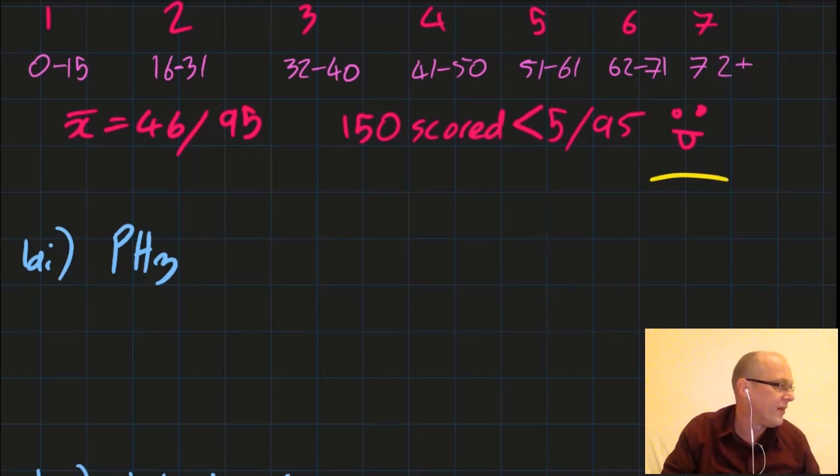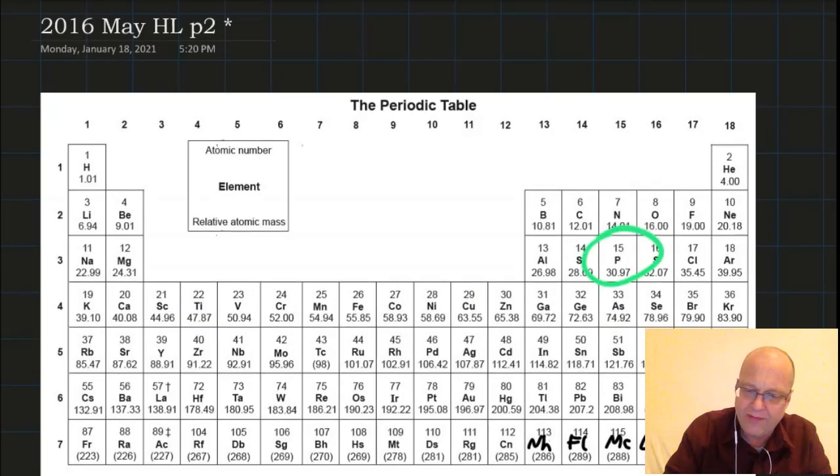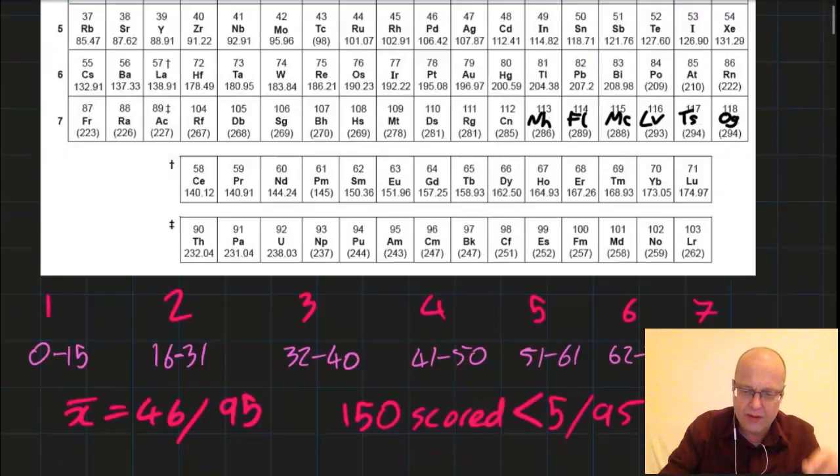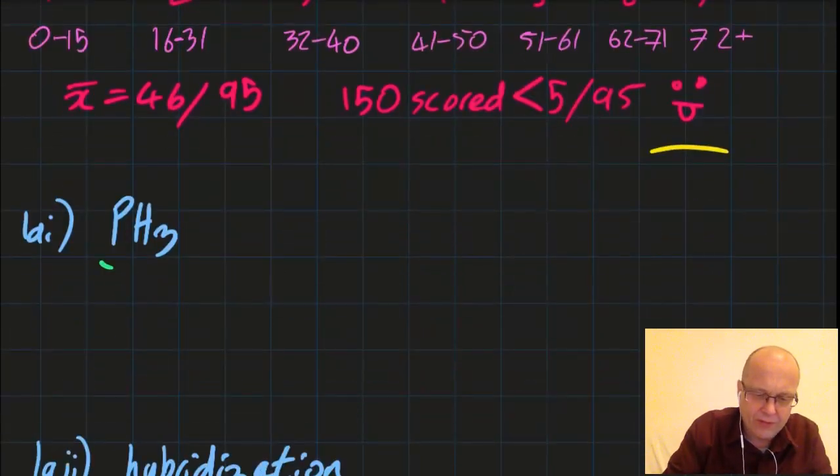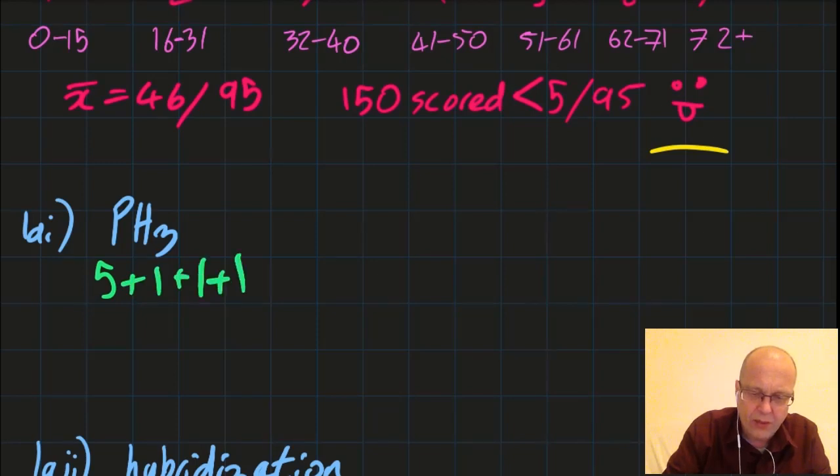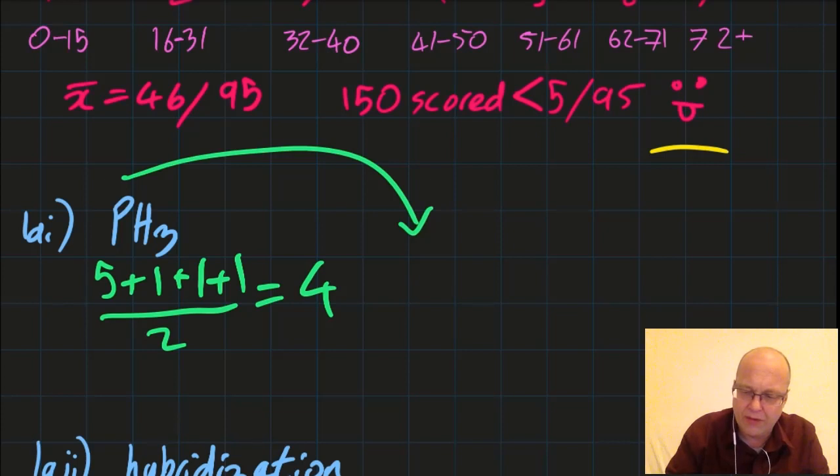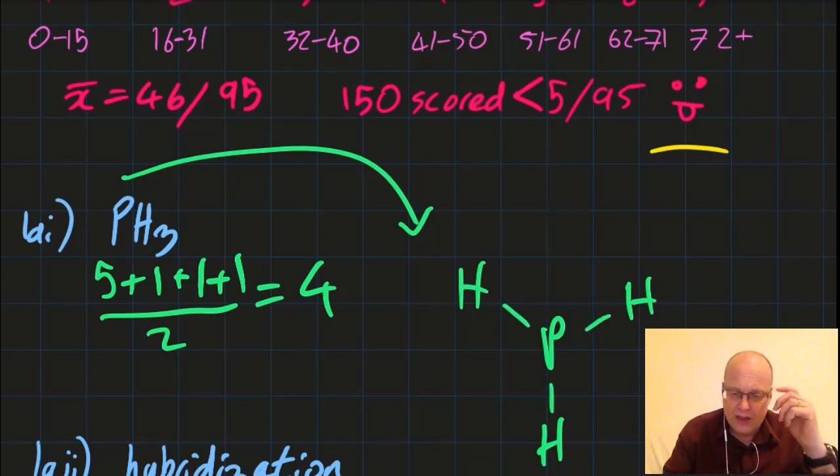Okay, pH3, phosphine. I seem to remember that spontaneously catches fire in air. Let's draw that out. Phosphorus is in group 15 with five valence electrons and hydrogen is in group one. I'm going to do 5+1+1+1, I want pairs, so that gives me four pairs of valence electrons. First atom probably goes into the center of the molecule. Spread the others evenly around, join them up. I've dealt with three electron pairs, I've got one more to deal with to make four. So I pop that on the phosphorus to make a stable octet. One point.